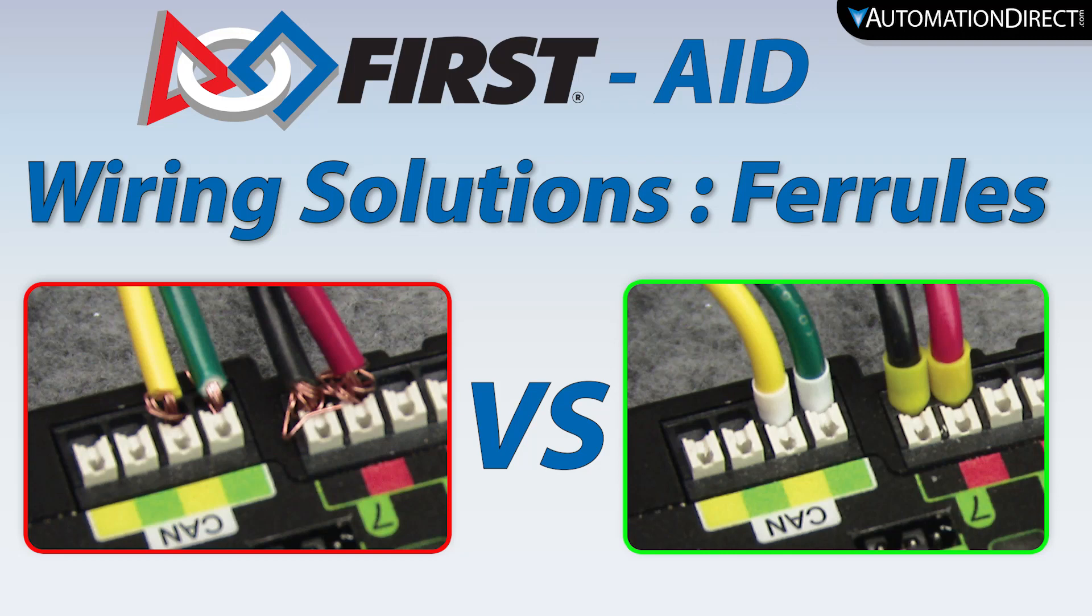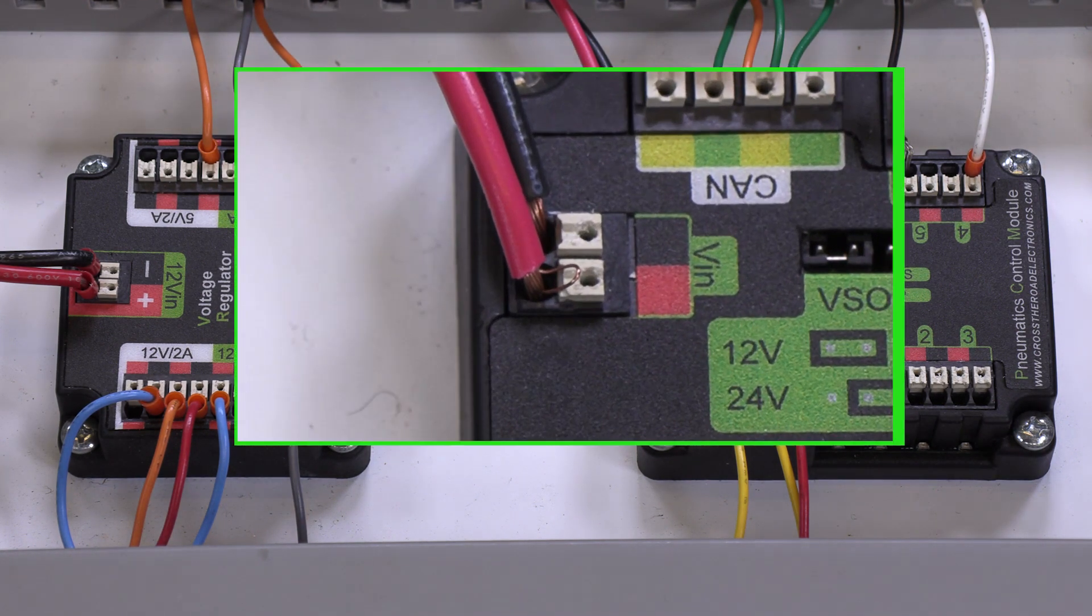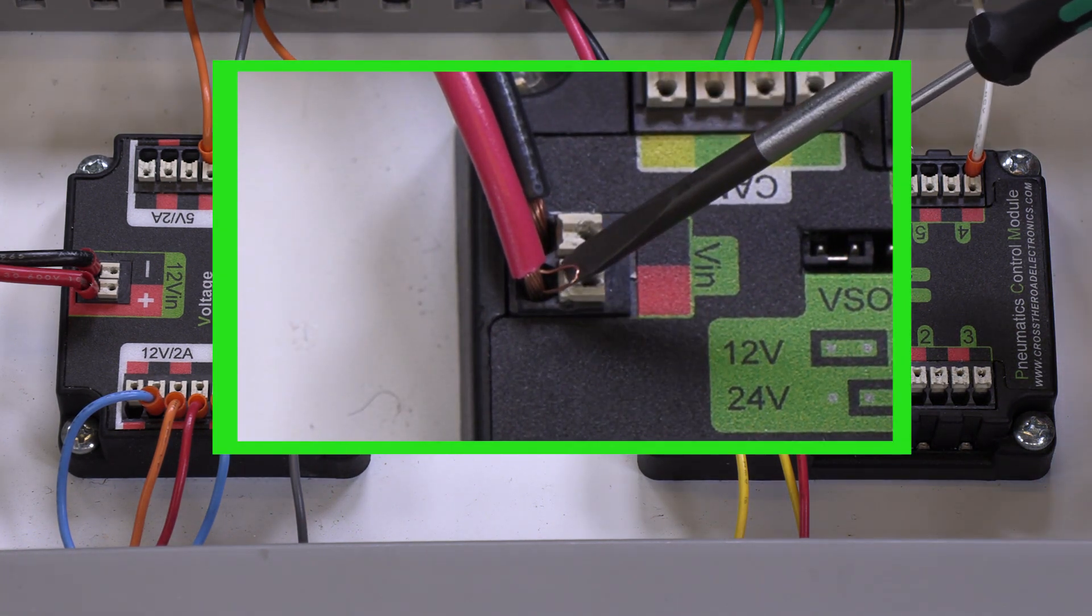Basic wiring concepts can greatly affect your robot's reliability while on the field. Take this pneumatic control module for example. If you look closely, you will notice this stray wire.